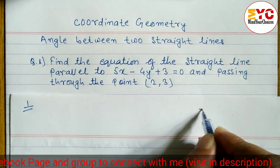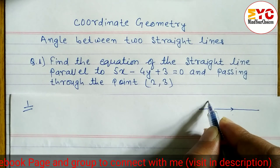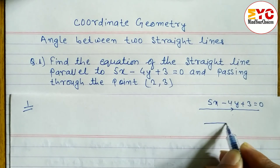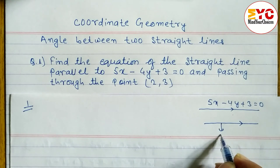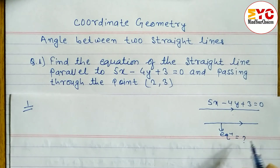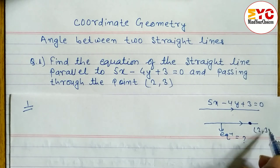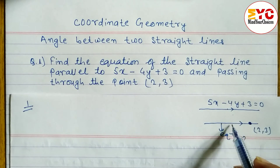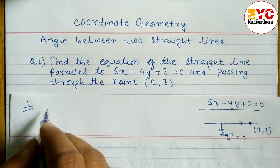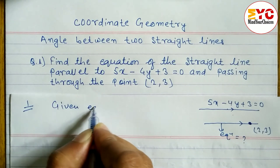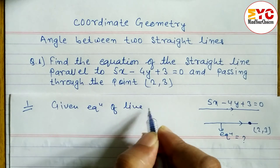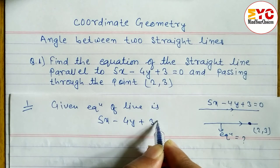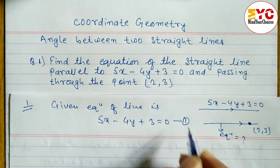The given equation is 5x minus 4y plus 3 equals zero. We have to find out the equation of another line which is parallel to this line and passing through the point (2, 3). When two lines are parallel, the slope of the given line and the slope of the required line are both equal. So let's start — the given equation of the line is 5x minus 4y plus 3 equals zero, which is equation one.